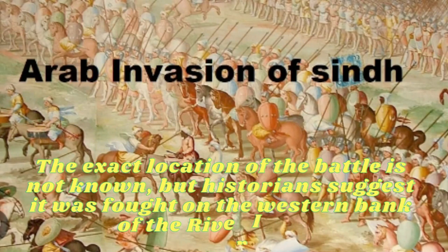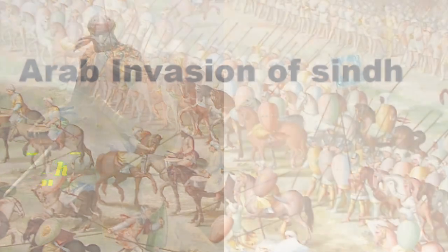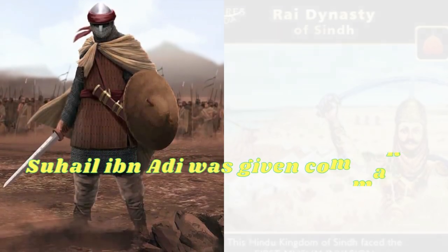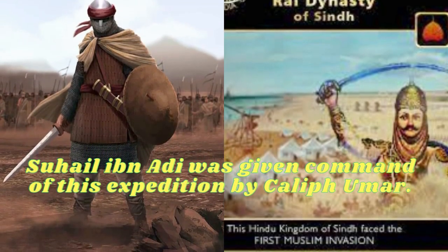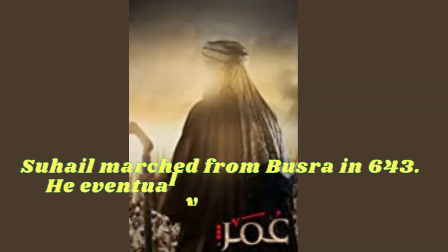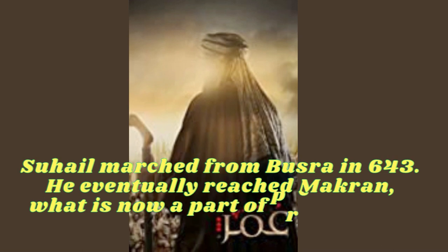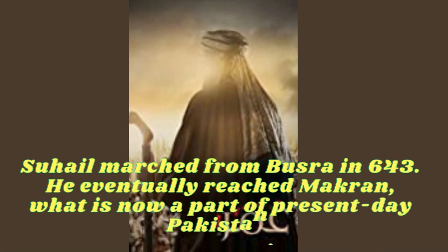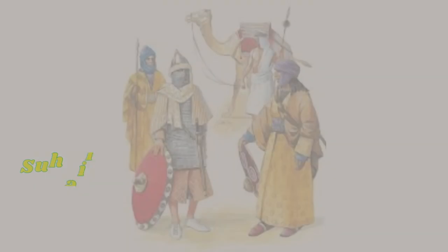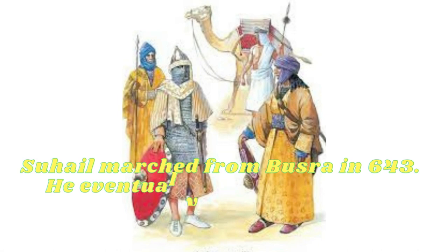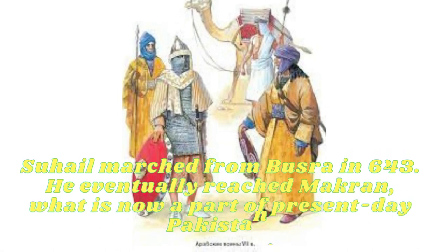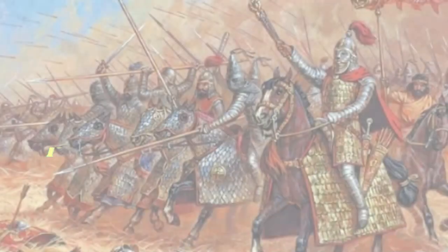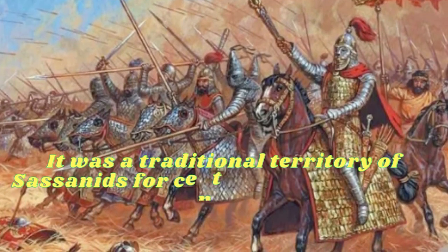Suhail ibn Adi was given command of this expedition by Caliph Umar. Suhail marched from Basra in 643 and eventually reached Makran, what is now a part of present-day Pakistan. It was a traditional territory of the Sassanids for centuries but was then a domain of the Rai Kingdom, who annexed it in 636–637, although they had acted as a vassal of the Sassanid Persians in the past.